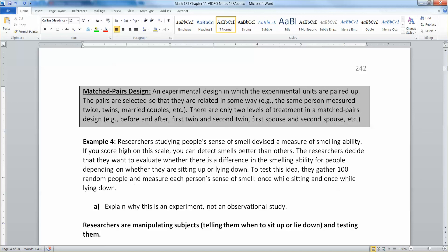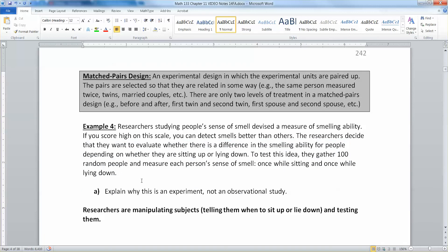So researchers studying people's sense of smell devised a measure of smell ability. If you score high on the scale, you detect smells better than others. The researchers decide that they want to evaluate whether there's a difference in the smelling ability for people depending on whether they are sitting up or lying down. To test this idea, they gather 100 random people and measure each person's sense of smell, once while sitting and once while lying down.